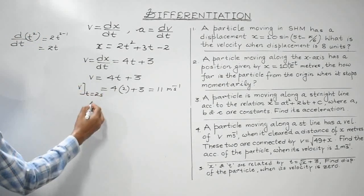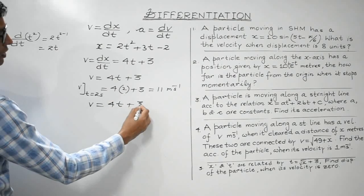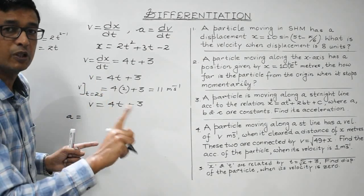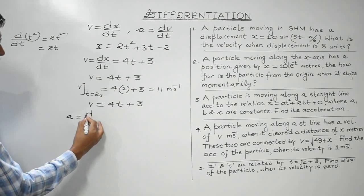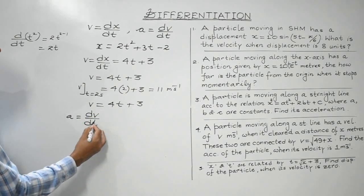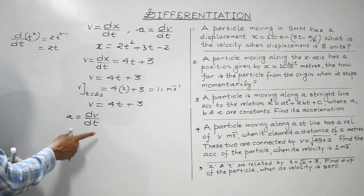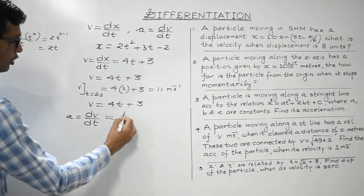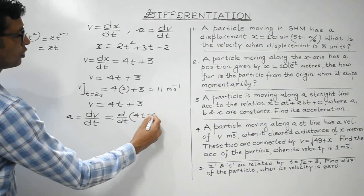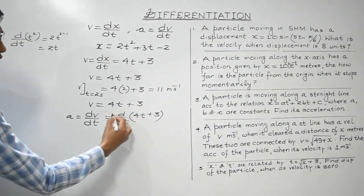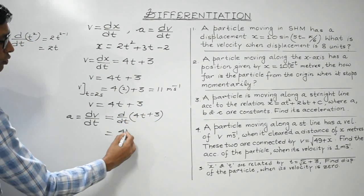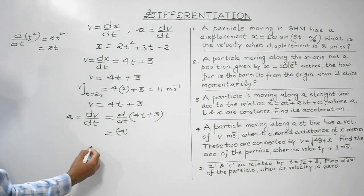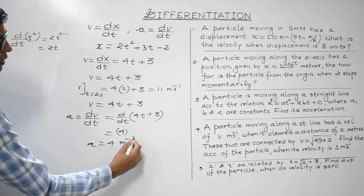Now if velocity is given as v = 4t + 3, acceleration can be determined by differentiating velocity with respect to time, because instantaneous acceleration is the time rate of change in velocity — the differential coefficient of velocity with respect to time. Differentiating 4t + 3: 4 being constant comes outside, dt/dt = 1, and the differential of constant 3 is 0. So acceleration = 4 m/s².